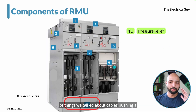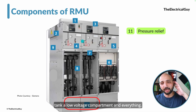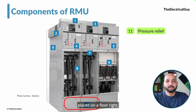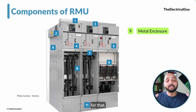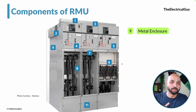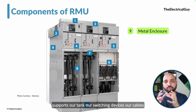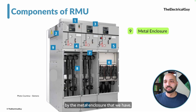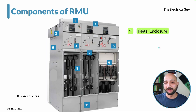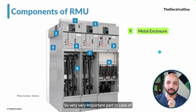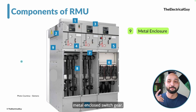All these things — cables, bushings, tank, low voltage compartment — cannot be placed open-ended on a floor. There has to be a metal enclosure for that. This complete assembly is placed inside a metal enclosure, which is very important because it supports the tank, switching devices, cables, and low voltage compartment. Everything is supported by the metal enclosure. It also provides the required IP rating for the device, and if needed, the IK rating as well.